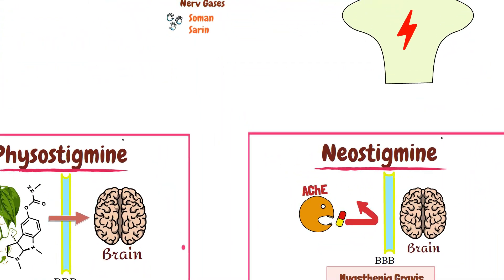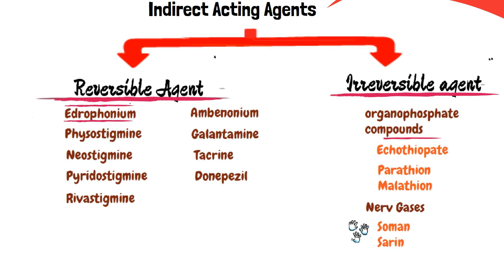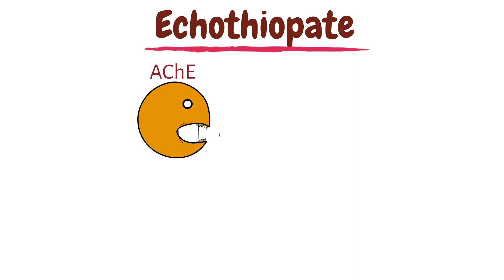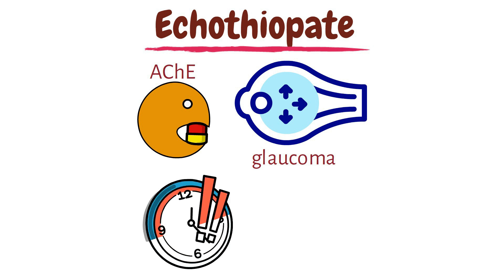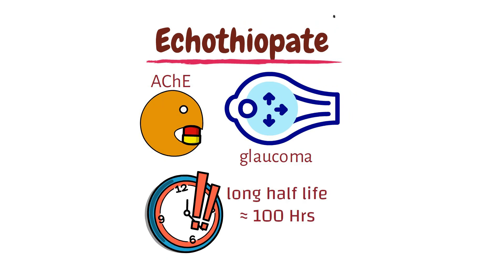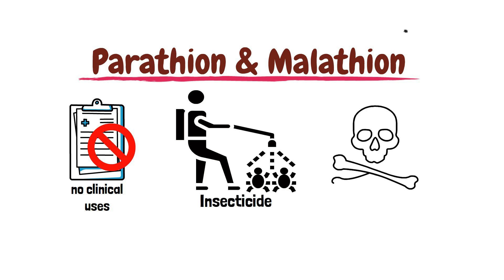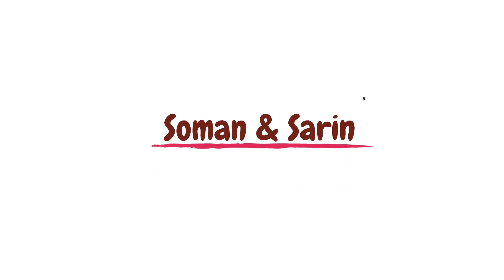The remaining agents are irreversible acetylcholinesterase inhibitors and include organophosphate compounds. This group contains drugs like echothiophate, which irreversibly binds to the acetylcholinesterase enzyme, and restoration of enzyme activity requires the synthesis of new enzymes. Echothiophate is rarely used for treating chronic glaucoma and has a long duration of action of about 100 hours. Other agents like parathion and malathion are not used clinically but are insecticides with toxicological importance. Meanwhile, soman and sarin are nerve gases used in warfare.